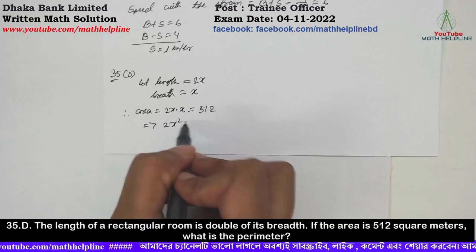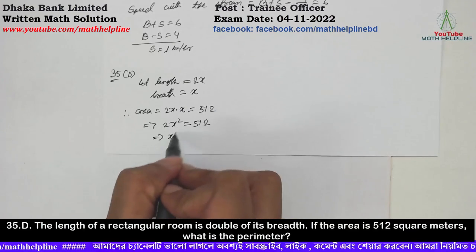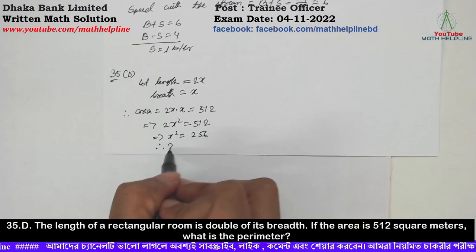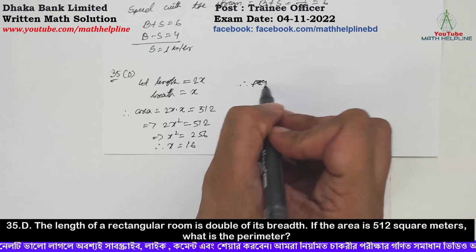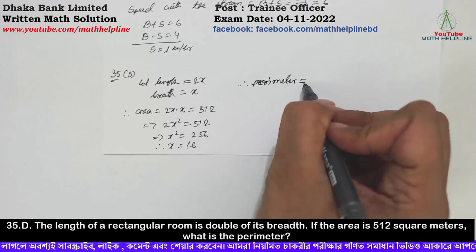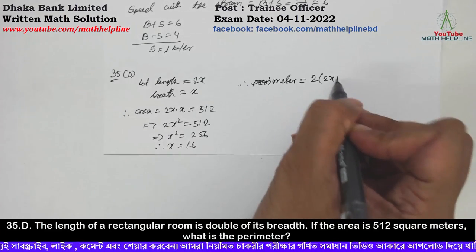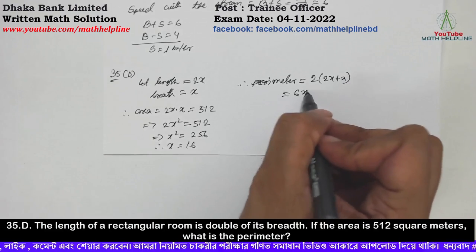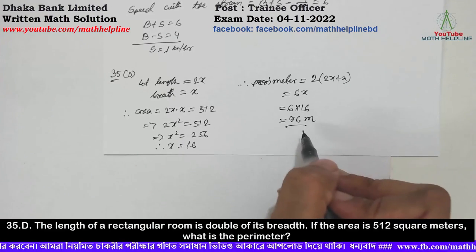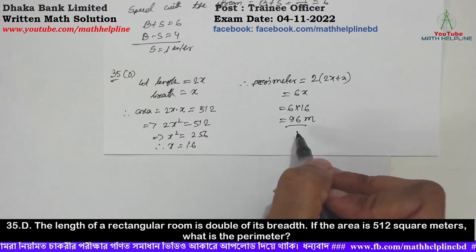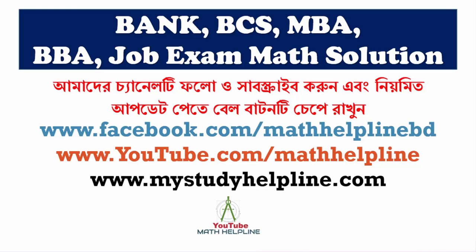2x squared = 512, so x squared = 256, therefore x = 16. The perimeter = 2 into (2x + x) = 6 into 16 = 96 meters. So the perimeter is 96 meters. Thank you very much.